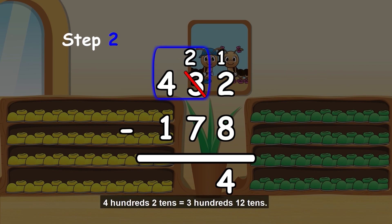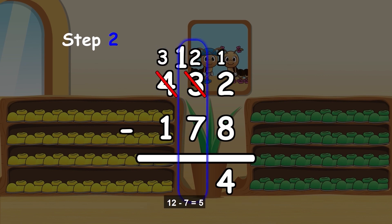4 hundreds, 2 tens equals 3 hundreds, 12 tens. 12 minus 7 equals 5.